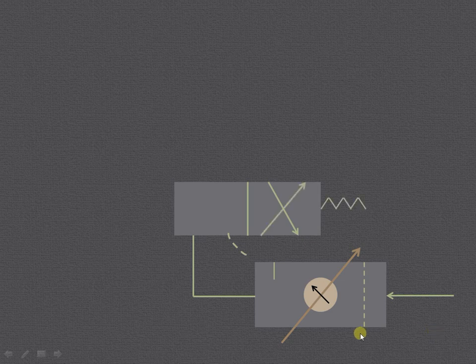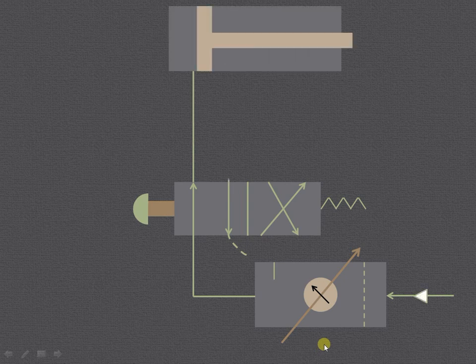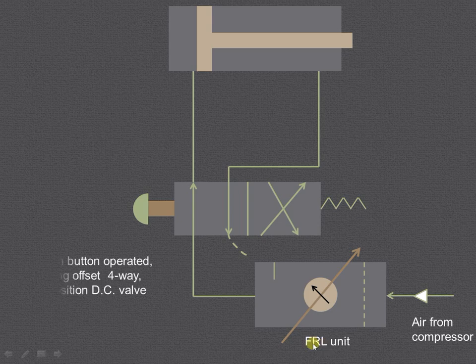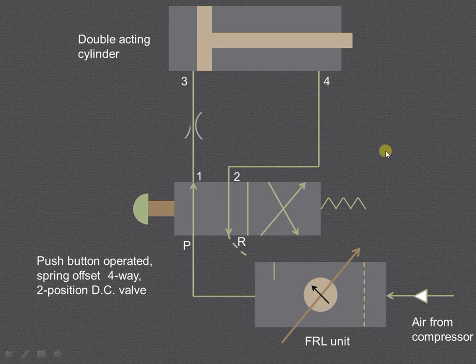As you can see, there are various components involved in this particular circuit: the FRL unit, the direction control valve, the double acting cylinder, and the flow control valve.